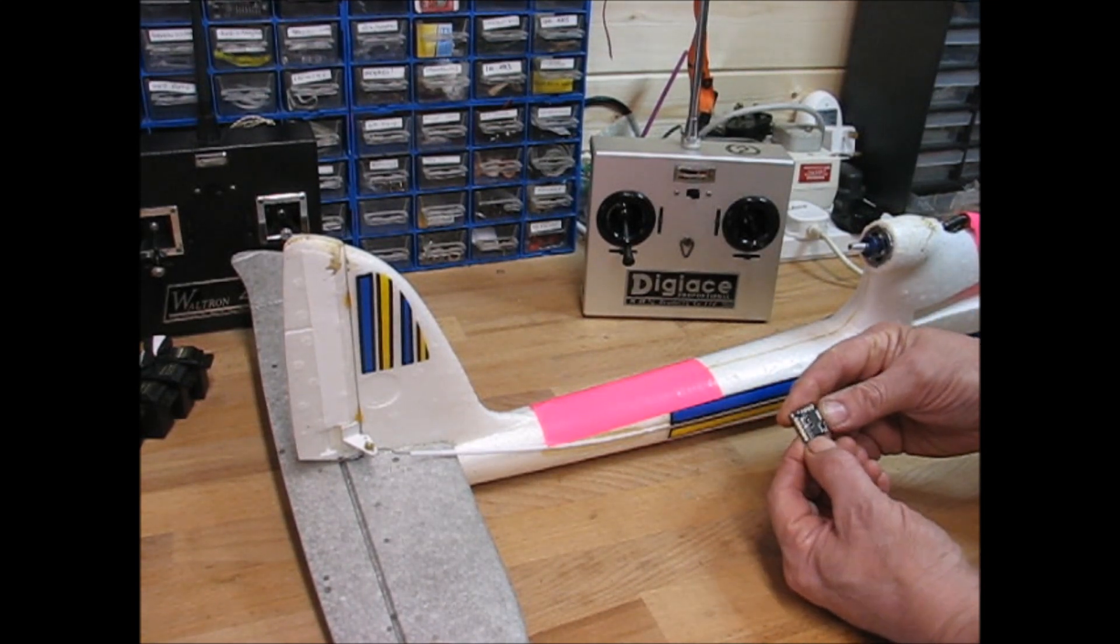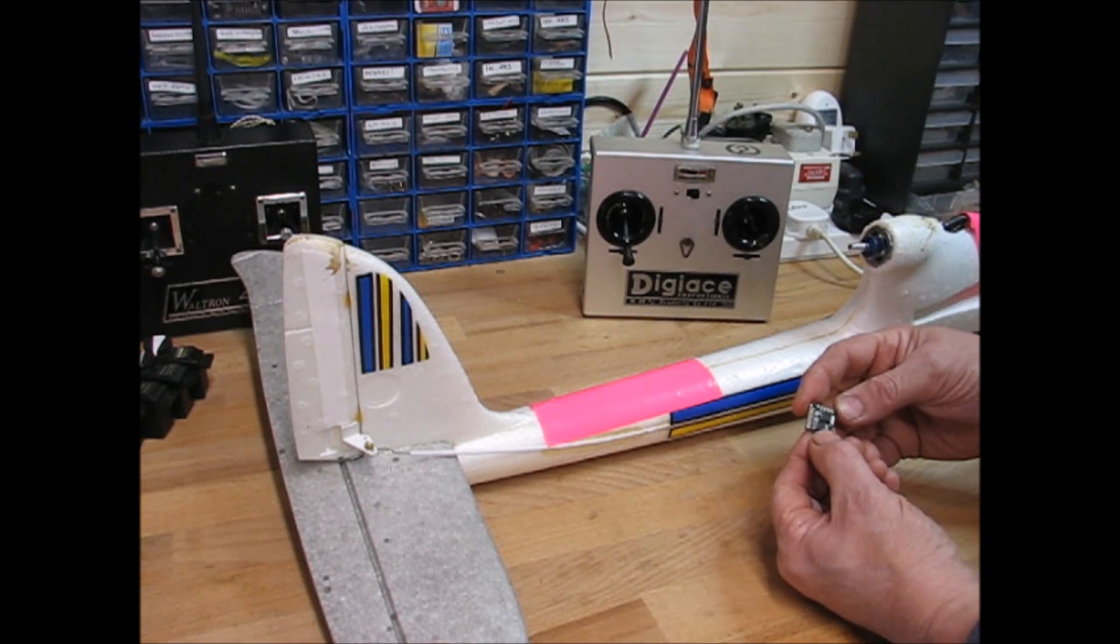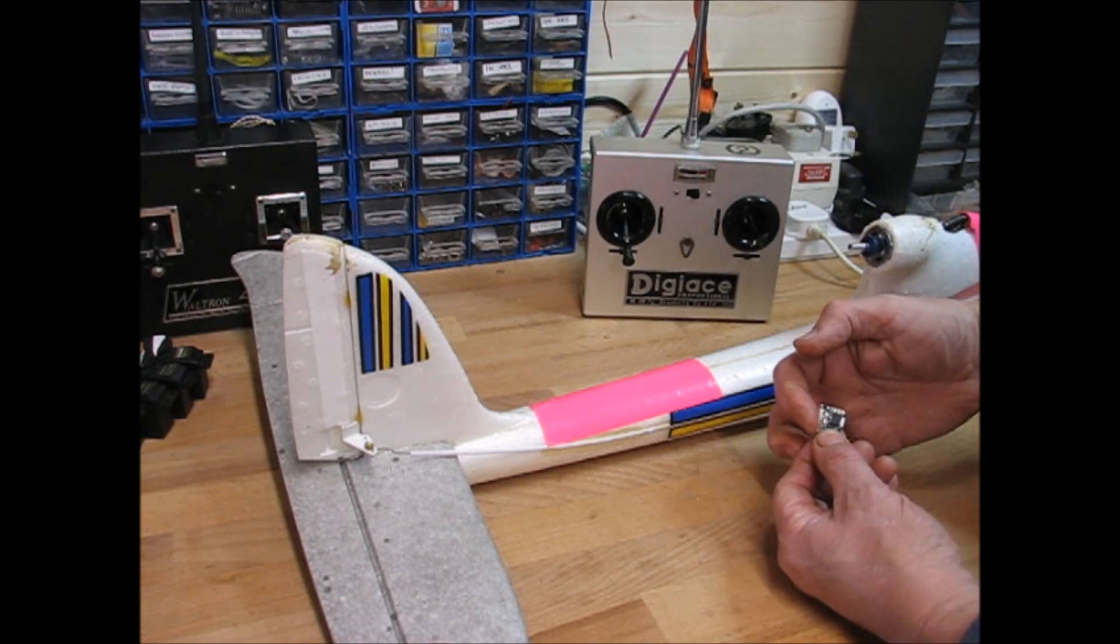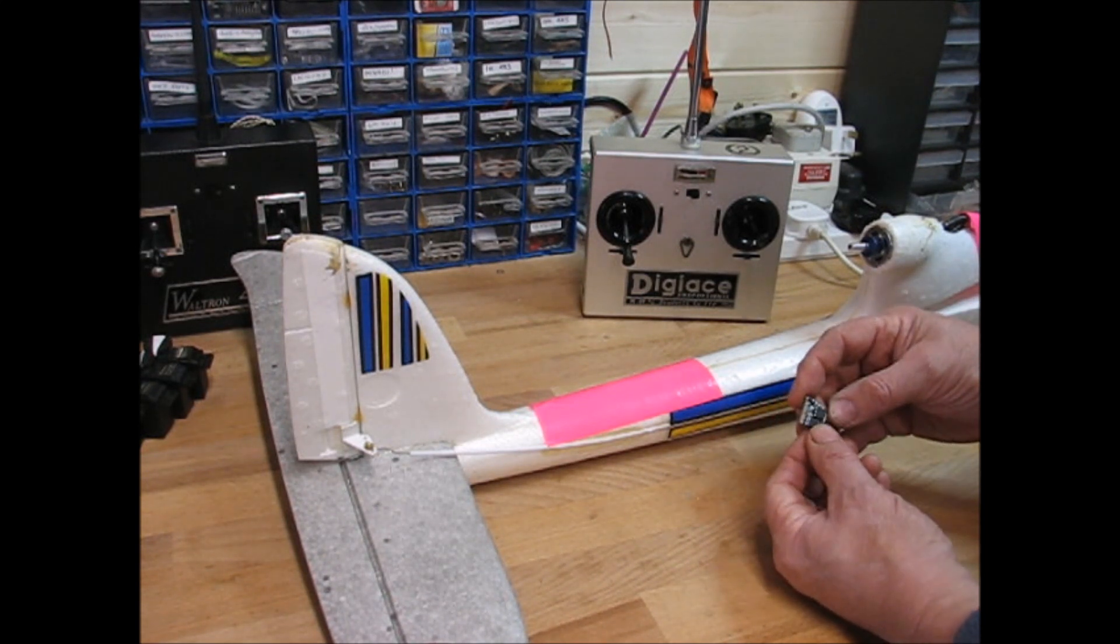So what you're left with is a 3/4 inch square board which is small and convenient but easy to use because the pins are still 1/10 standard spacing, so there's plenty of room there.